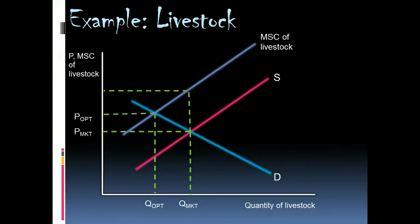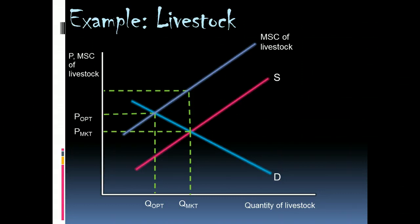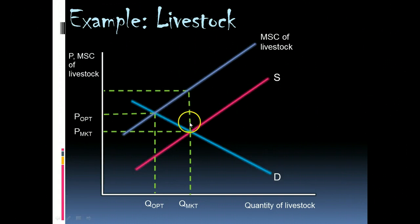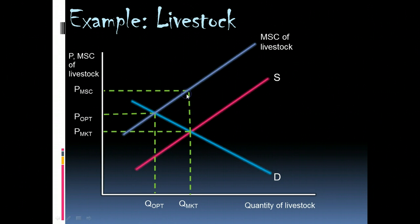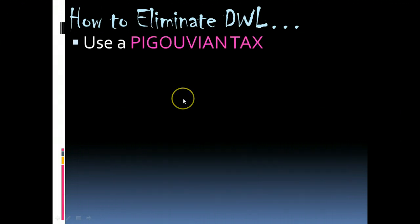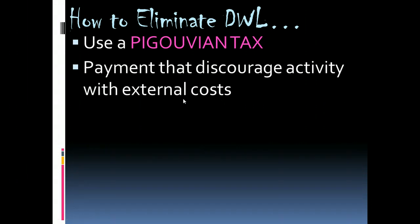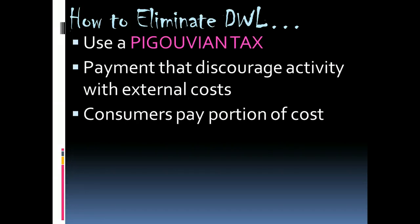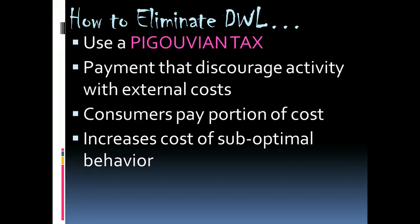We need to take into account this marginal social cost, and we see that to get to the efficient level of livestock, there's a cost the farmer is not taking into account. This creates deadweight loss in an area where there are transactions that could make people better off without making others worse off. In order to eliminate it, we might use a Pigouvian tax — a payment that discourages behavior by helping the individual internalize the cost. By taxing the individual, they begin to see the actual cost to society, which will alter their behavior, and the consumer pays a portion of the cost to society in order to reduce the amount of the negative externality.